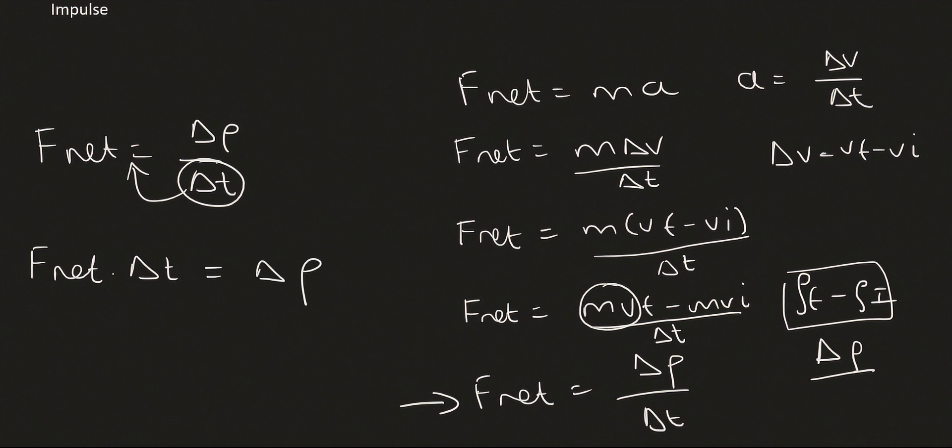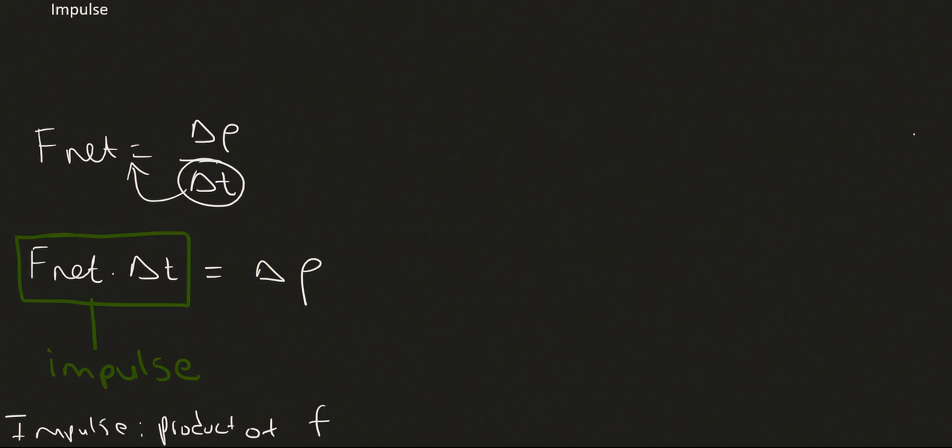This expression here on your left, that is what we call impulse. So there are a few important things we can see here. Impulse, by definition, if we write out its definition, is literally the product of force and time. That is what impulse is.